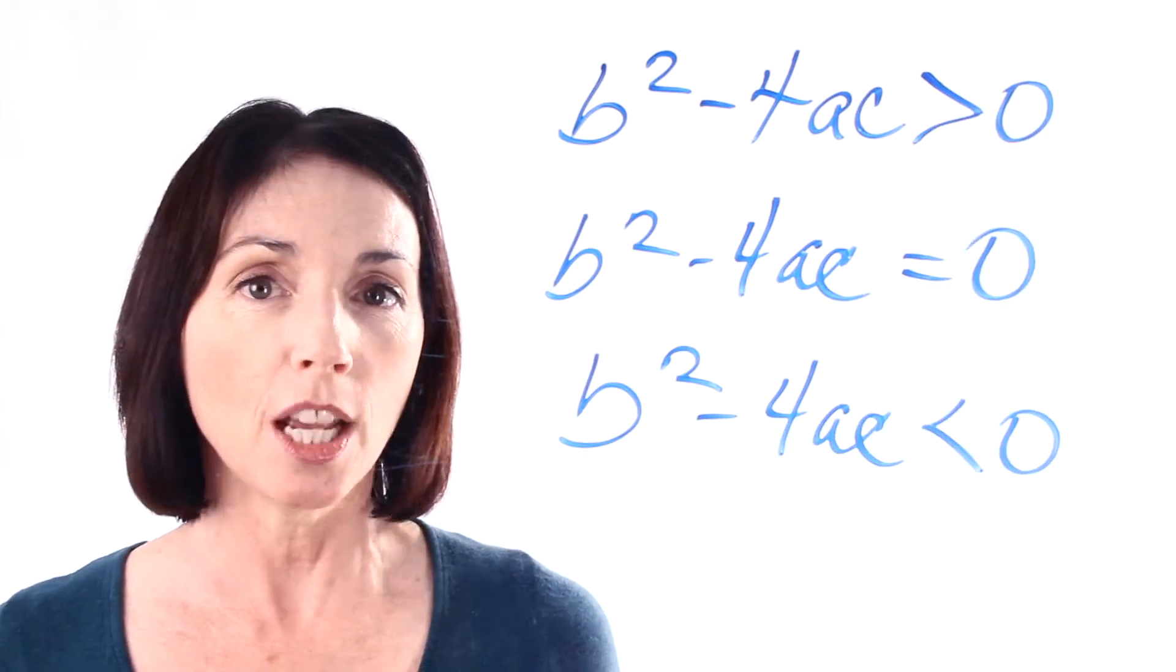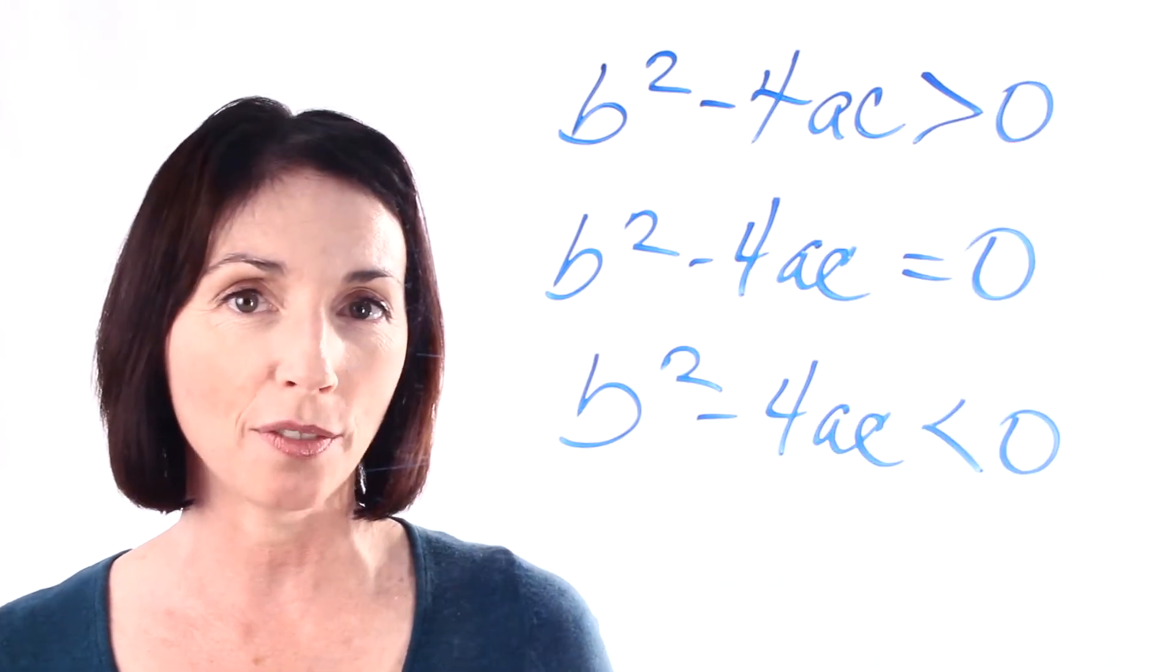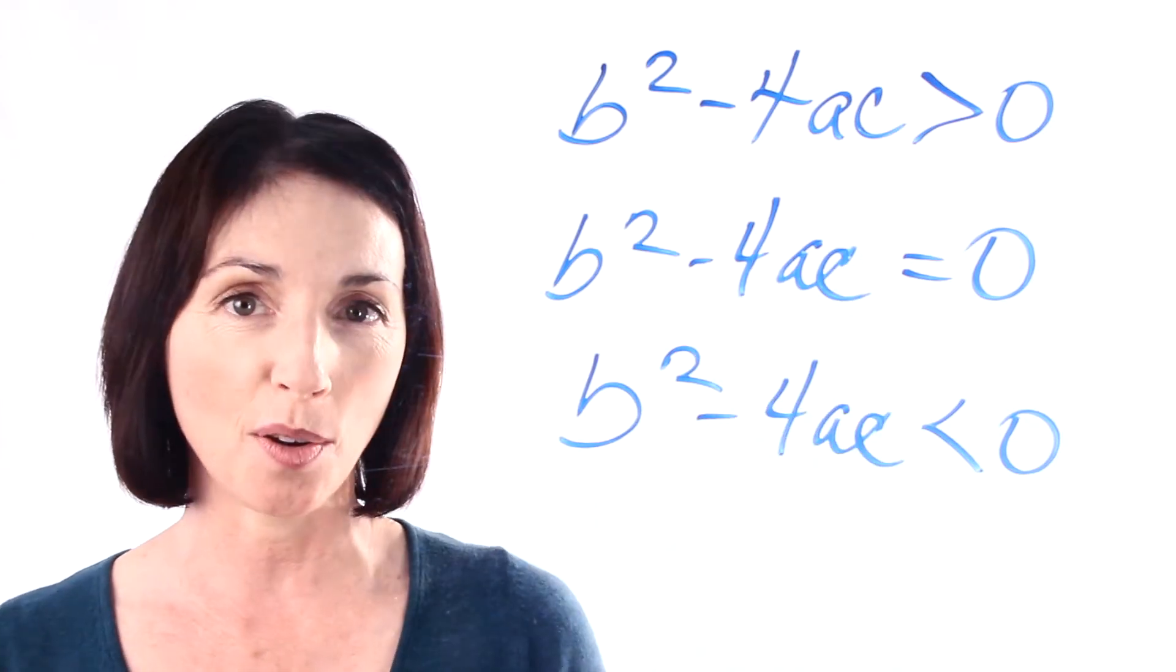That's how you use the discriminant to determine what kind of roots you have. And next time we're going to do an example of this and you'll see how it works.